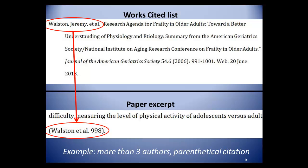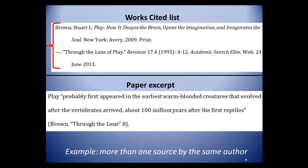It will look like this. If you have two or more sources by the same author listed in your Works Cited list, you need to distinguish between those sources when referencing them in the in-text citation. You do this by adding all or part of the title in between the author's last name and the page number. Notice the comma and period placement.